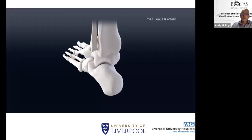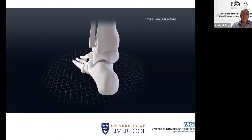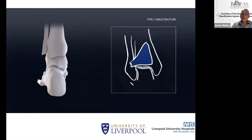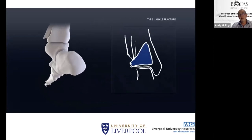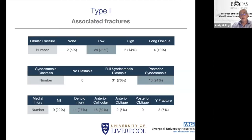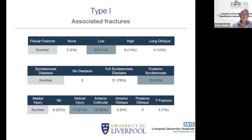The type 1 is your PITFL avulsion. In a typical inversion injury, the PITFL avulses off the posterolateral corner along with a rim extending across. With these injuries, all of them had a syndesmosis injury — three quarters were a full syndesmosis diastasis and the other quarter were just posterior syndesmosis. The majority did not have associated medial malleolar fractures.